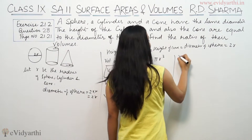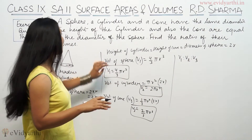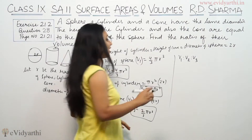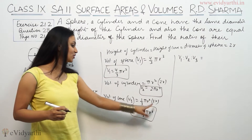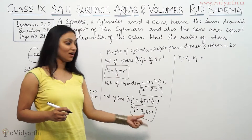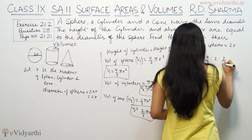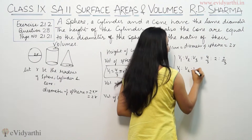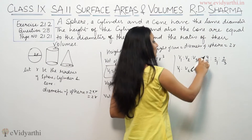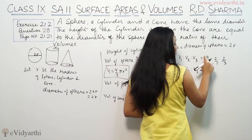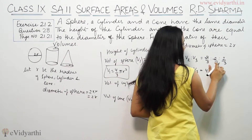Now the ratio of the three volumes is V1 : V2 : V3. Make sure to take this order just as the question mentions. So the volumes are 4/3 π r³ : 2π r³ : 2/3 π r³. Cancelling π r³ from all three gives 4/3 : 2 : 2/3. To remove the denominators, multiply everything by 3.